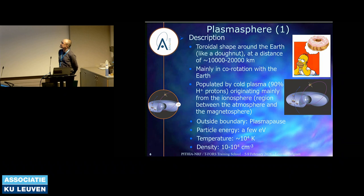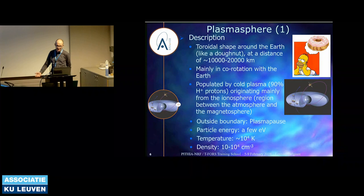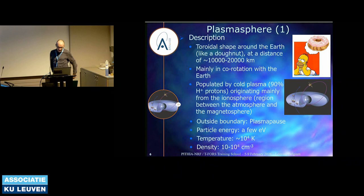The plasmasphere is a region which has a toroidal shape around the Earth — like a donut, as you can see in this image. Here you have another sketch with the Earth, some satellite orbits, and a cut of the plasmasphere showing its shape. Its distance from the Earth is between 10,000 and 20,000 kilometers. As it's quite close to the Earth, its global motion is mainly in co-rotation with the Earth. It's populated by cold plasma, mainly 90% hydrogen protons, and they originate mainly from the ionosphere.